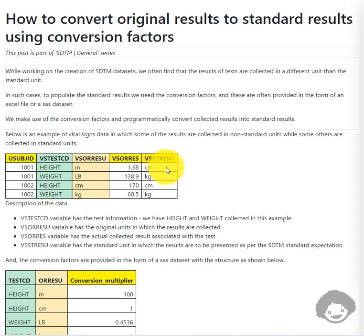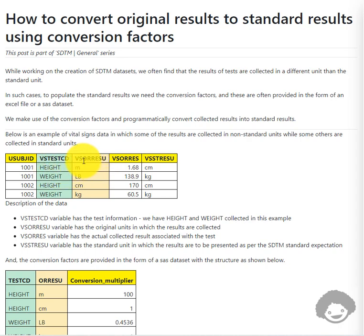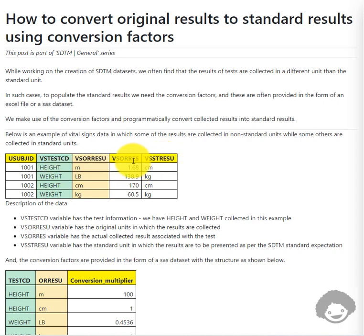In this example, vital signs height and weight are being collected. The standard result unit for height is centimeter and for weight it is kg. Looking at the first record, the height original result unit is reported in meters, so VSORRES is 1.68 meters. But the standard result unit for that height test code is centimeters, so we need to convert 1.68 meters to a centimeter value — that is what we call conversion of original result to standard result units.